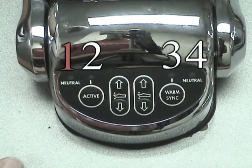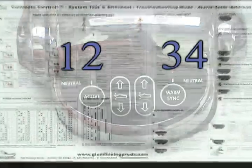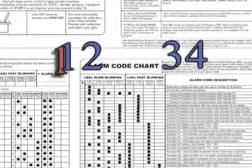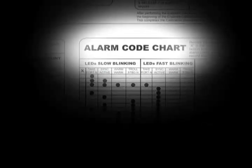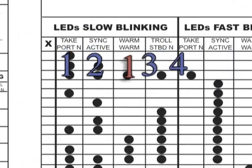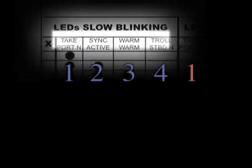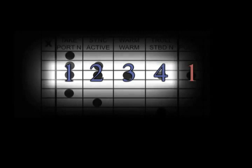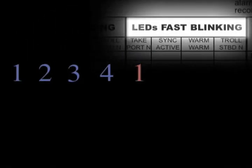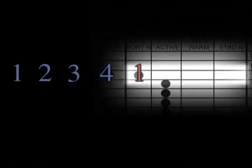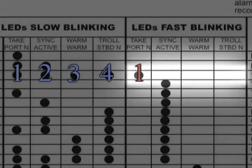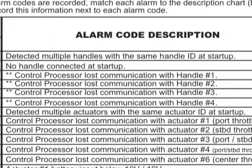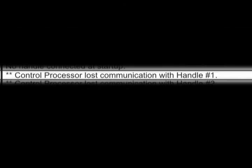In just the same way as how we determine the alarm count, we can use the technical manual information to determine the specific alarm. In the example at hand, we see that we have the number one light blinking fast, followed by lights number one, two, three, and four blinking slowly. Reviewing our chart, we see that this corresponds to the alarm indicating that the control processor lost communication with handle number one. If this were an actual alarm, this would tell us that the most recent alarm indicated a station communications problem between the control head and the control processor.